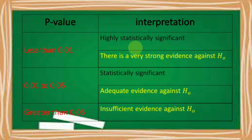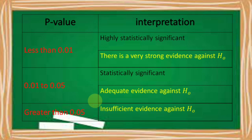For a p-value less than 0.01, it is highly statistically significant and there is very strong evidence against the null hypothesis. For a p-value of 0.01 to 0.05, it is statistically significant and there is adequate evidence against the null hypothesis. For a p-value greater than 0.05, there is insufficient evidence against the null hypothesis.